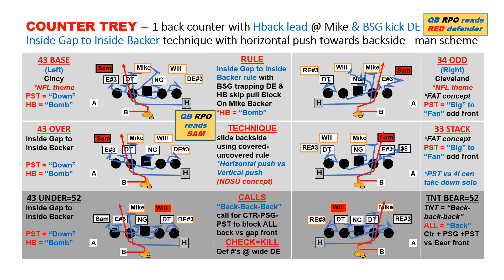The next variation for inside gap is counter tray. This is where the backside guard will pull flat and kick out the defensive end, and the H-back will still pull with his bomb block on the mic. The Sam backer is again the read key defender. We use an NFL theme with Cincy to the left and Cleveland to the right. The O-line rule is all blocking down and blocking back, with the guard pulling flat using a me-call, and the H using his bomb block up on the mic.